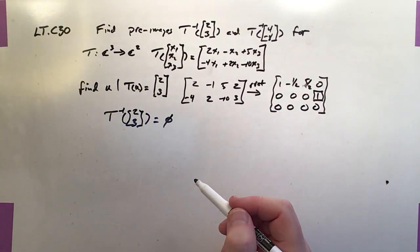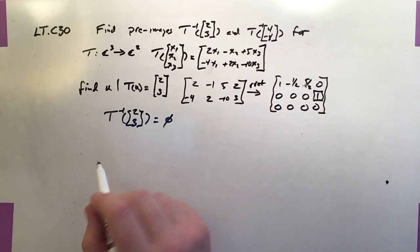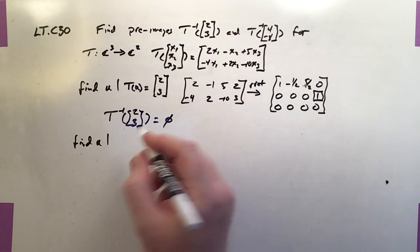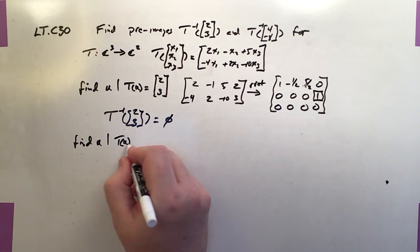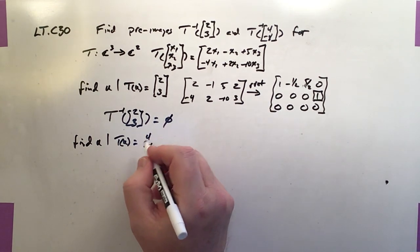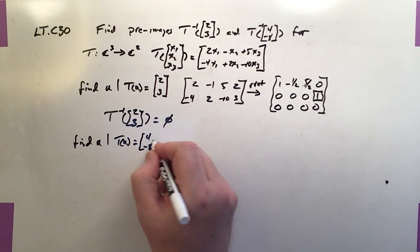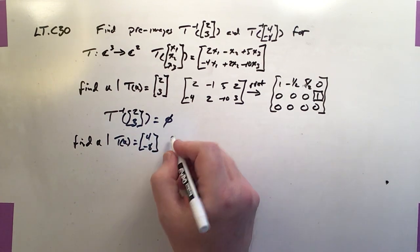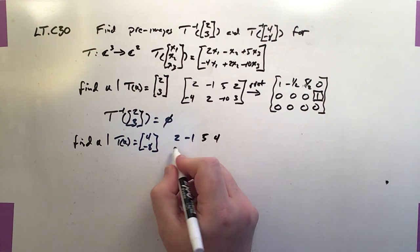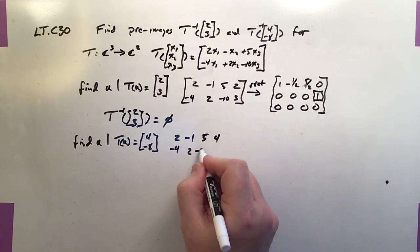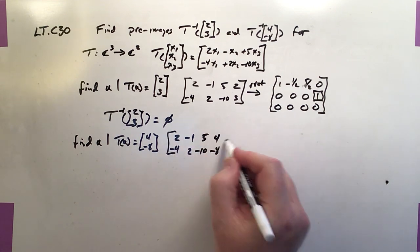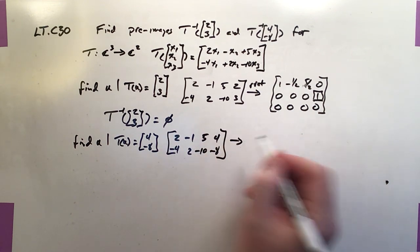Okay, let's do the same thing for [4, -8]. Okay, so we want to find a u such that T(u) is going to end up being equal to [4, -8]. And to do that, I build the augmented matrix: [2, -1, 5, 4] and [-4, 2, -10, -8]. And of course, I'll add a row of zeros to that too, so the REF works out.